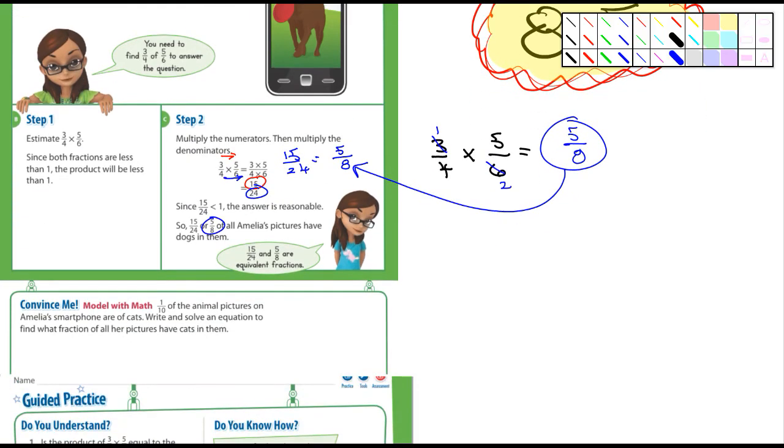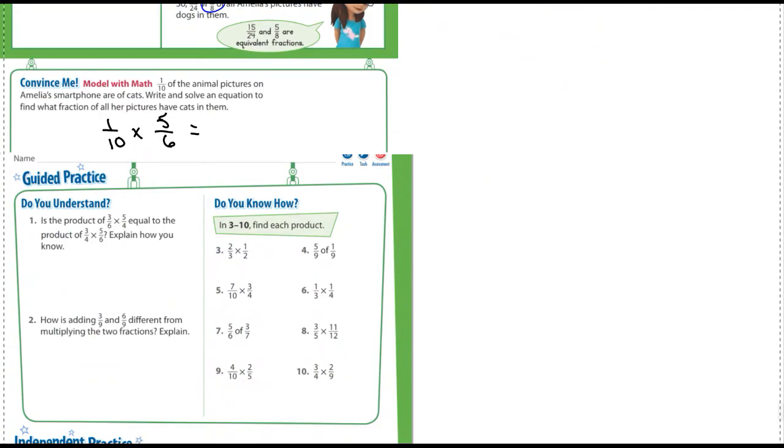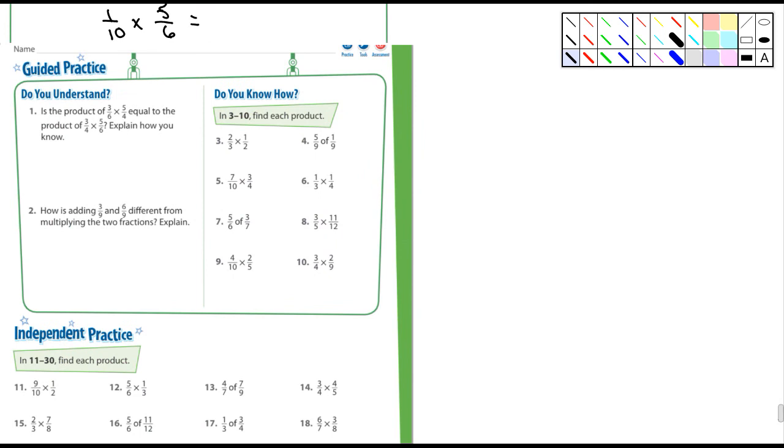The convince me, it says one-tenth of all the animal pictures on Amelia's smartphone are of cats, right? And solve an equation to find what fraction of her pictures are cats. So that's going to be one-tenth times five-sixths. I'll let you guys do that one.